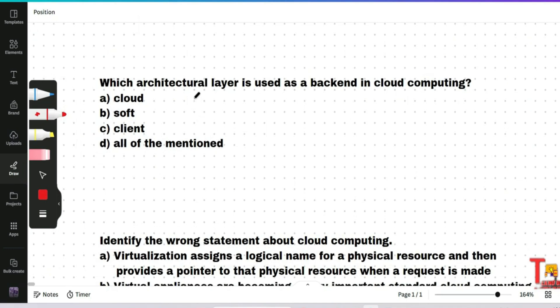Okay, the next question is which architectural layer is used as a backend in cloud computing: cloud, soft, client, or all of the mentioned? Which layer? The answer will be option A. The cloud creates a system where resources can be pooled and partitioned as needed. So the architectural layer is cloud.